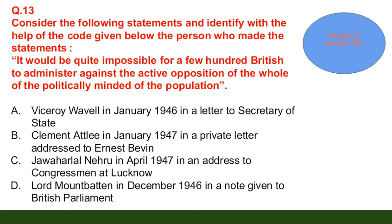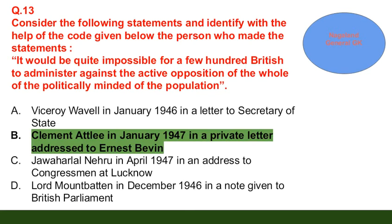Question number 13: Consider the following statement — 'It will be quite impossible for a few hundred British to administer against the active opposition of the whole of the overtly politically minded population.' Options: A: Viceroy Wavell in January 1946 in a letter to the Secretary of State; B: Clement Attlee in January 1947 in a private letter addressed to Ernest Bevin; C: Jawaharlal Nehru in April 1947; D: Lord Mountbatten in December 1946. The correct answer is option B — Clement Attlee in January 1947 in a private letter addressed to Ernest Bevin.